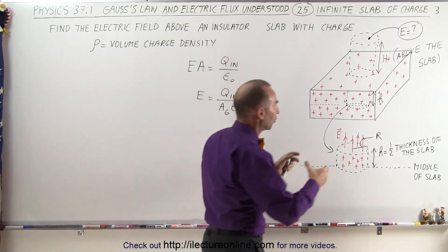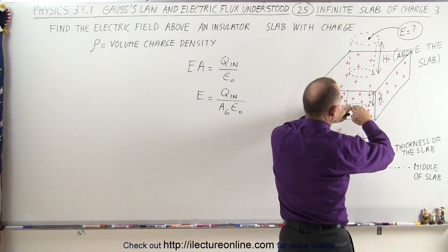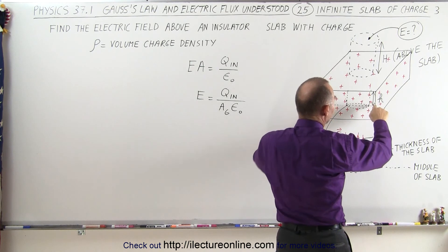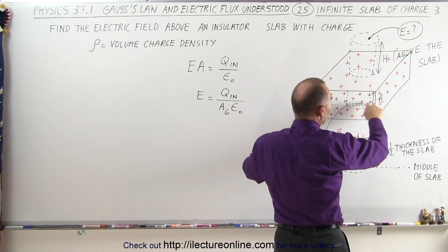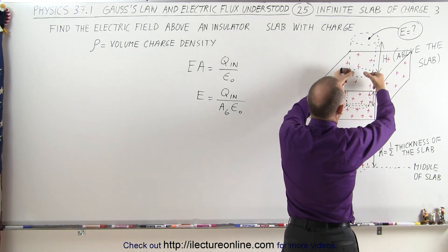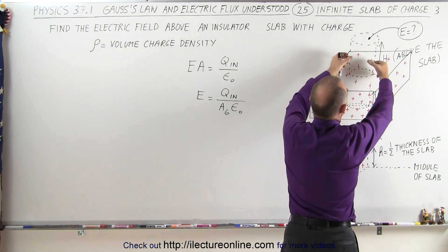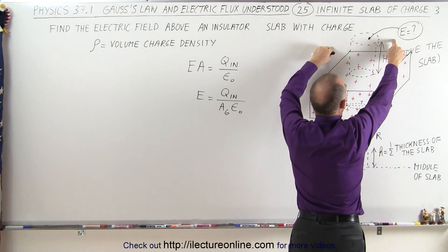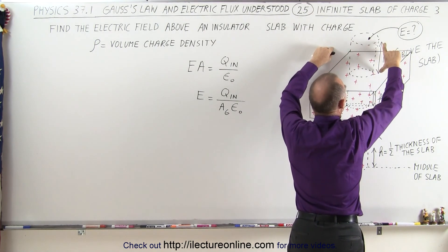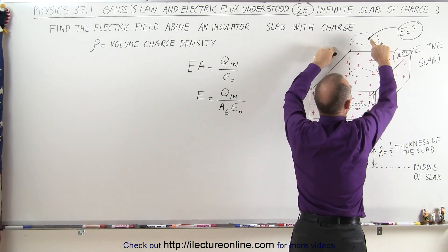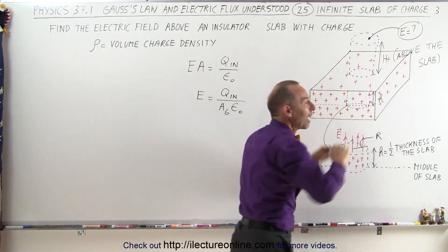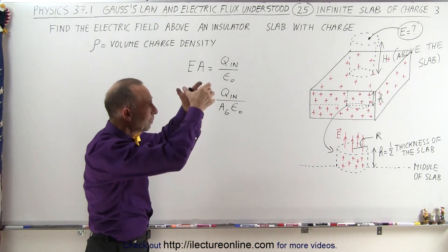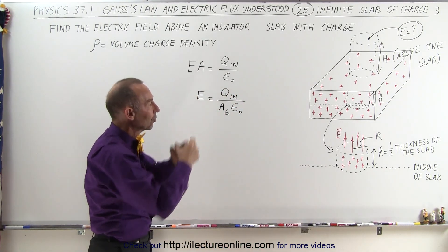Notice the Gaussian surface is going to start at the halfway point of the slab. The bottom is going to be a circle, emanating upward through the slab, upward towards the point of interest some distance capital H above the top surface of the slab. That will be our Gaussian surface.